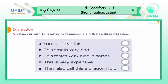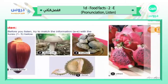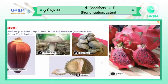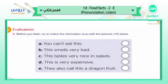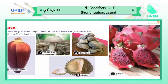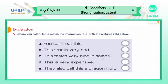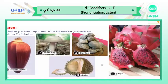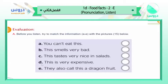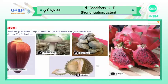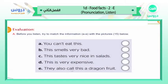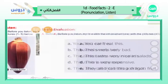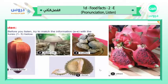A — you can't eat this. Which one can't you eat? B — this smells very bad. Which one? C — this tastes very nice in salads. D — this is very expensive. E — they also call this a dragon fruit. Which one? Write your answers and we'll listen now to check and correct any mistakes.